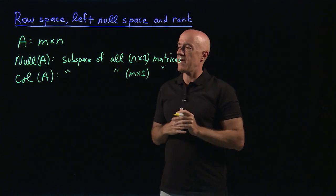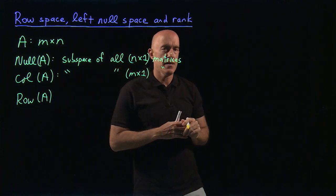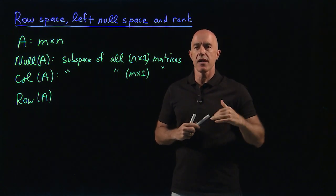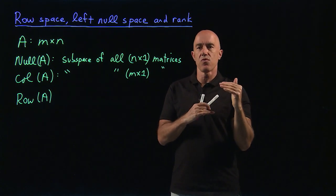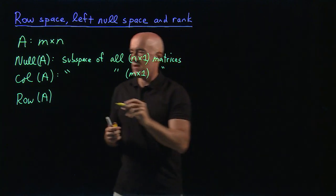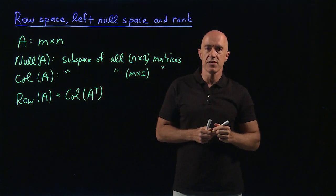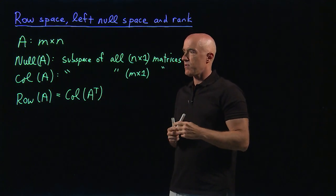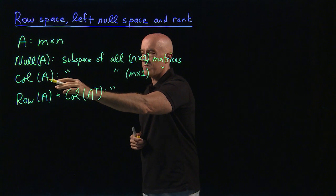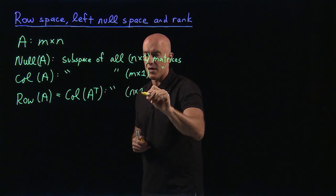Now, the row space is the vector space spanned by the rows of matrix A. Since we only talk about column vectors, you take the transpose of the rows. Another way of looking at it is that the row space is the column space of the transpose matrix A^T. That makes it a subspace of all N by 1 matrices.